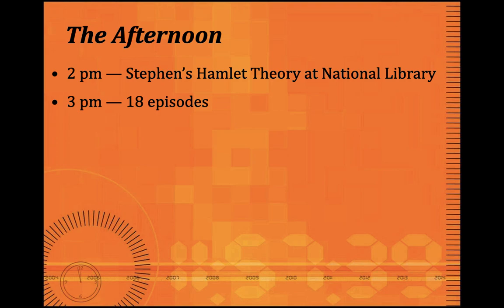At 3 p.m. there is no single story — instead you suddenly meet a host of characters, including Stephen Daedalus's sisters. Across this chapter, 18 mini-episodes appear without plot development, like a reflection of the novel's own 18-episode structure.